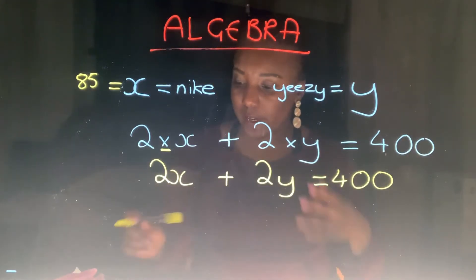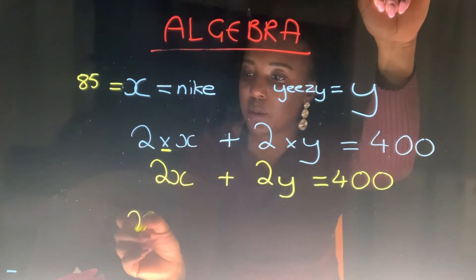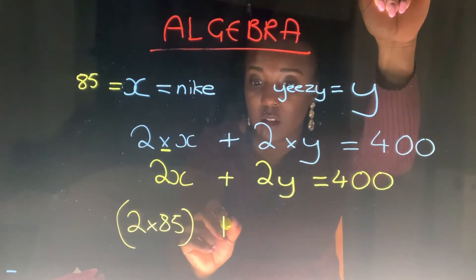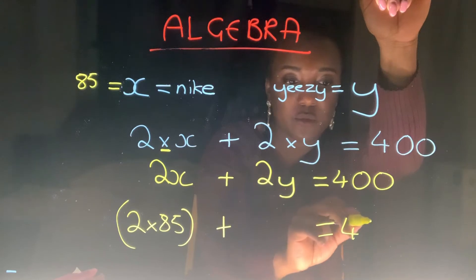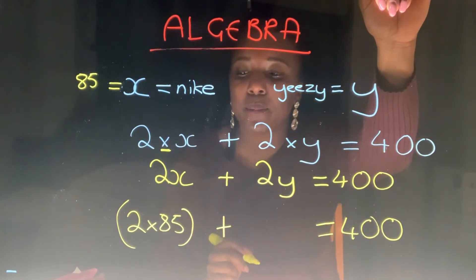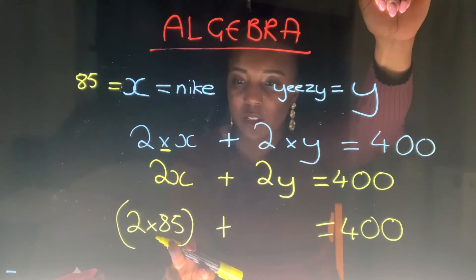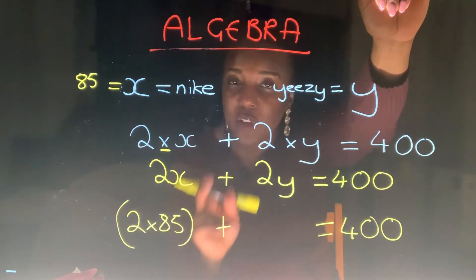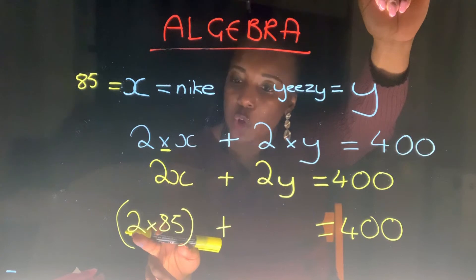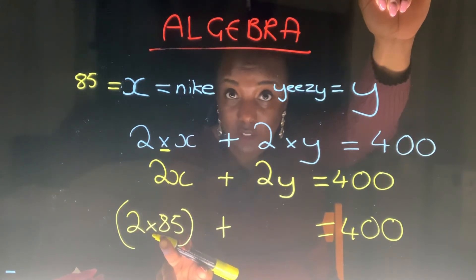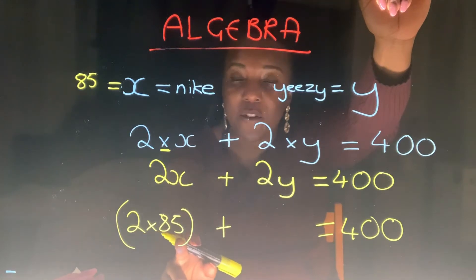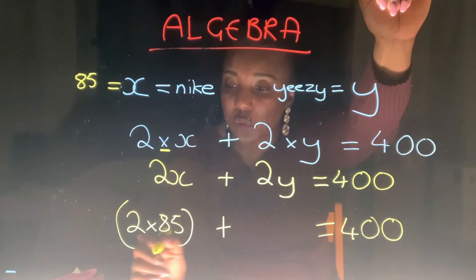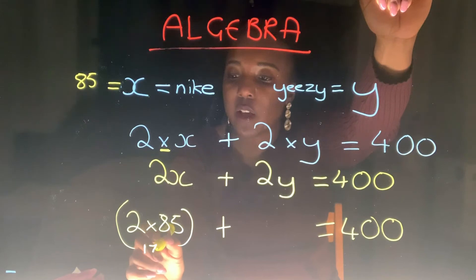Right, so let's get cracking with this. If I do 2X with X as 85 — I'm going to put that into brackets — and I know that I've got 400 over here, I simply take the total cost of the Nikes away from 400 to give me the cost of 2 Yeezys. So what's 2 times 85? Quick way without a calculator: 2 times 80 is 160, and 2 times 5 is 10, so 160 plus 10 is equal to 170.